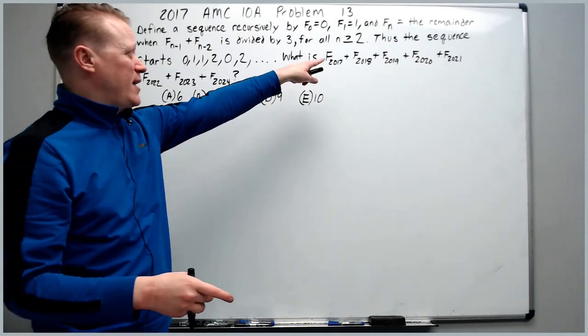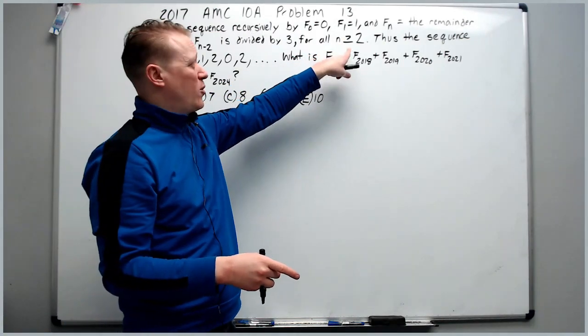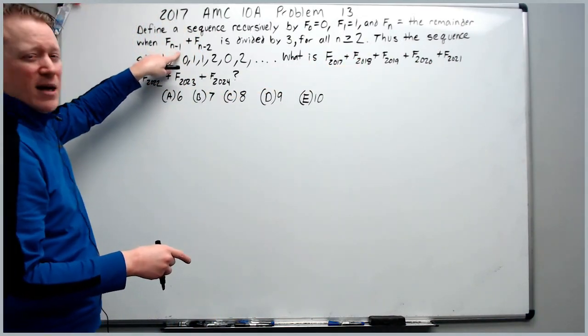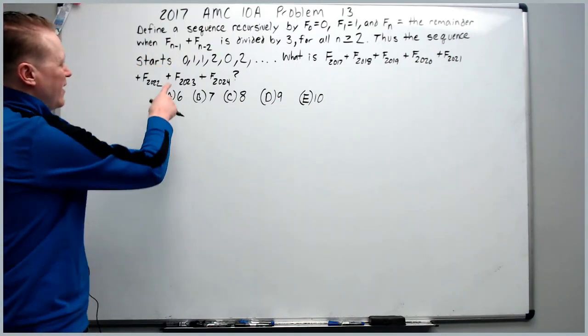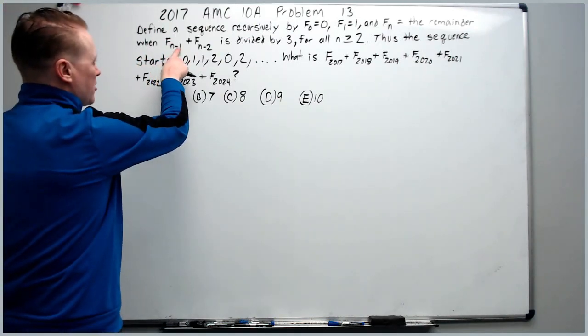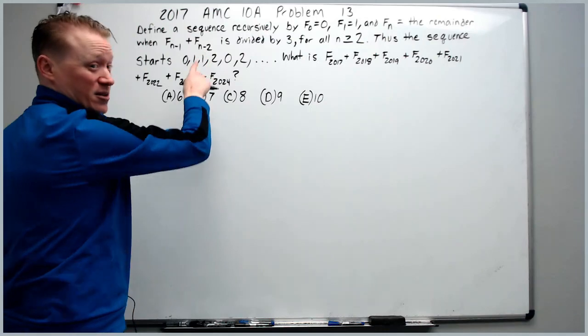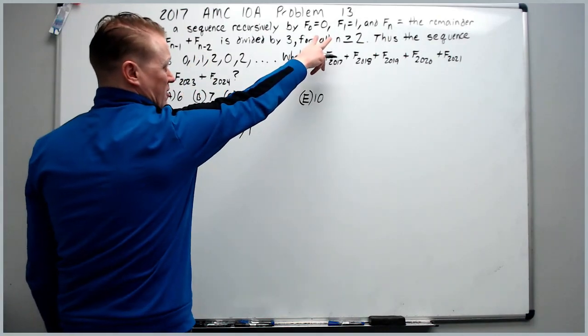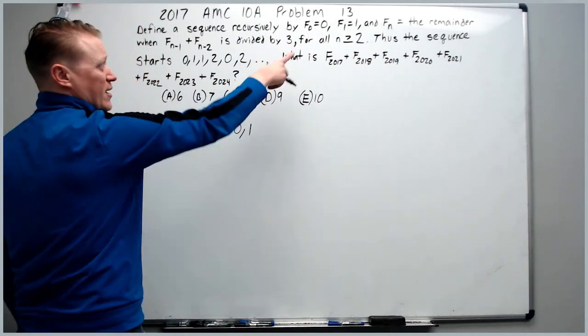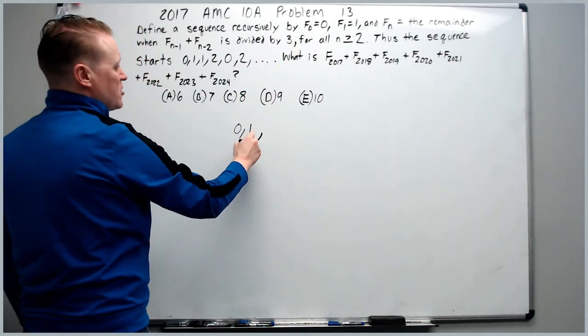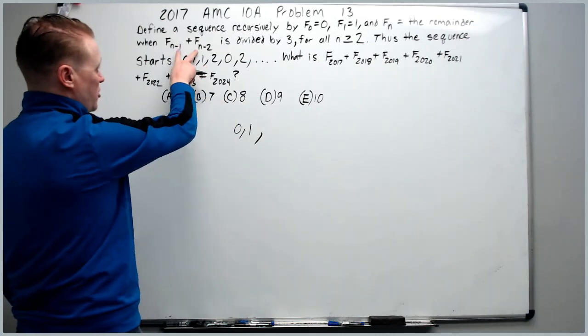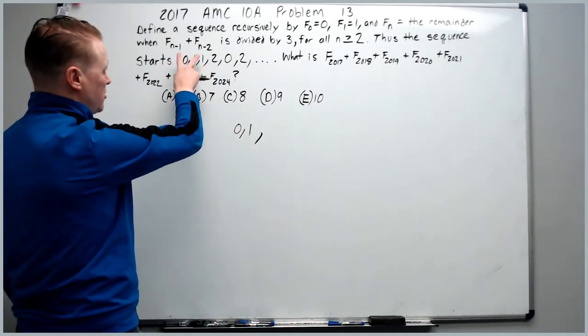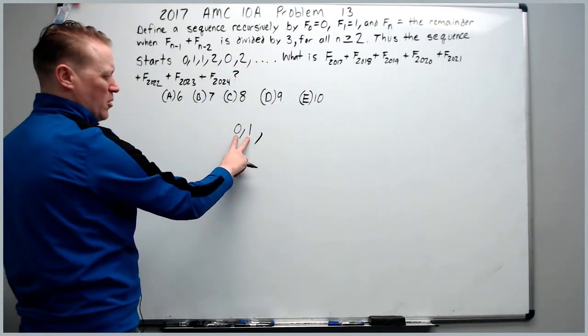The secret is just to start plugging in values for n. Don't think of this as f sub n minus 1—think of it as the previous term plus the second previous term. That's easier to think about. So we know the sequence starts 0, 1 because it tells us f₀ = 0 and f₁ = 1. The next term is the remainder when the previous two terms' sum is divided by 3.